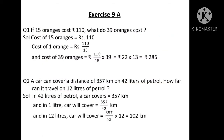Now we will move to Exercise 9A. Exercise 9A is totally based on direct variation. First of all we have to see question number 1: If 15 oranges cost rupees 110, what do 39 oranges cost?